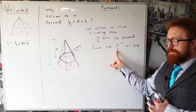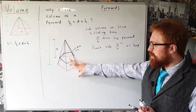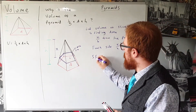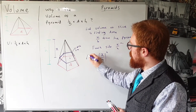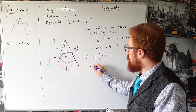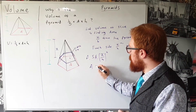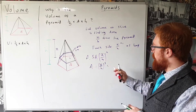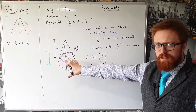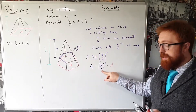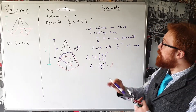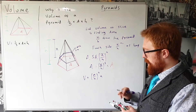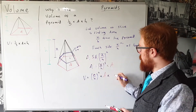The linear scale factor is x over H. If the scale factor for lengths is x over H, then the scale factor for area is that squared: (x/H)². So the area of the purple cross-section equals (x/H)² times the area of the base A. This means the volume of one of these purple slices is (x/H)² times the area of the base A times the width delta x.